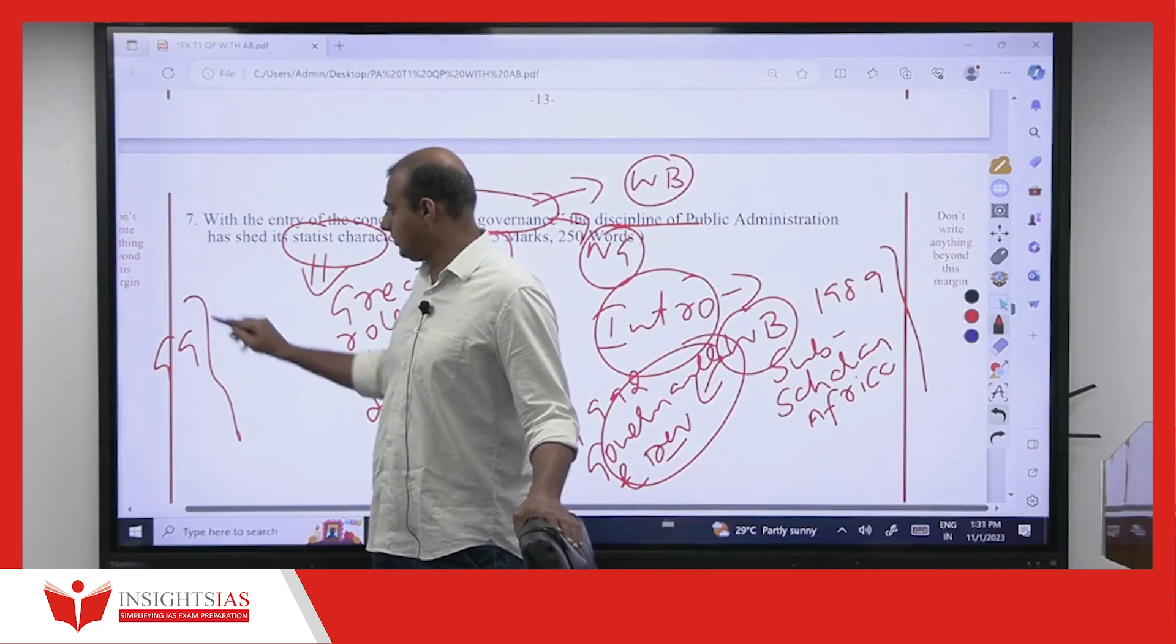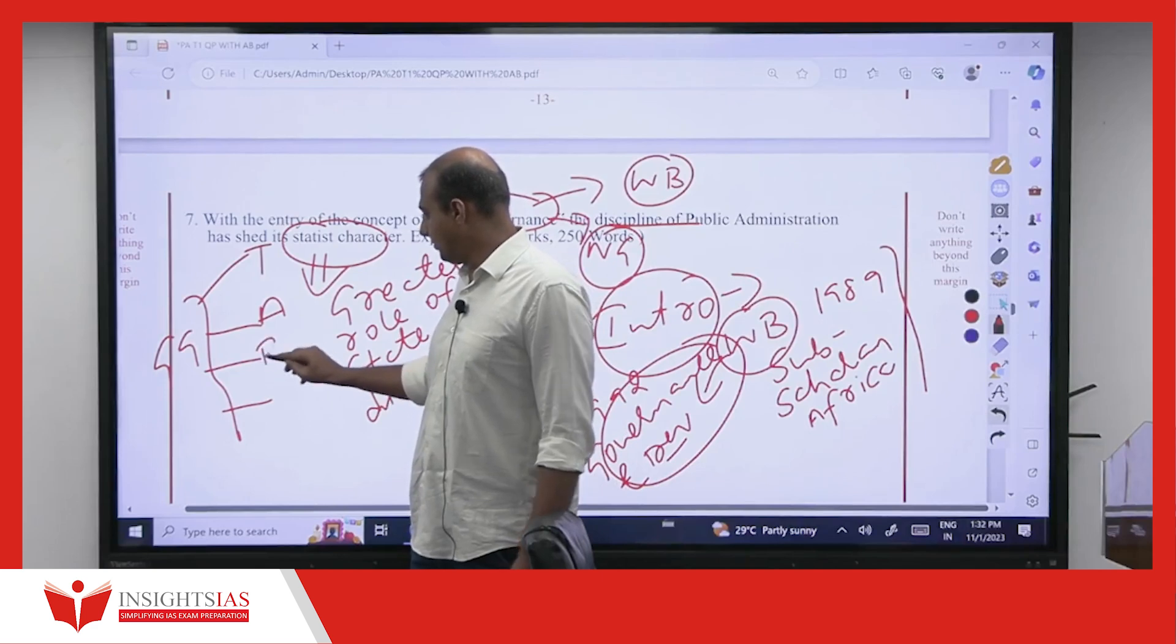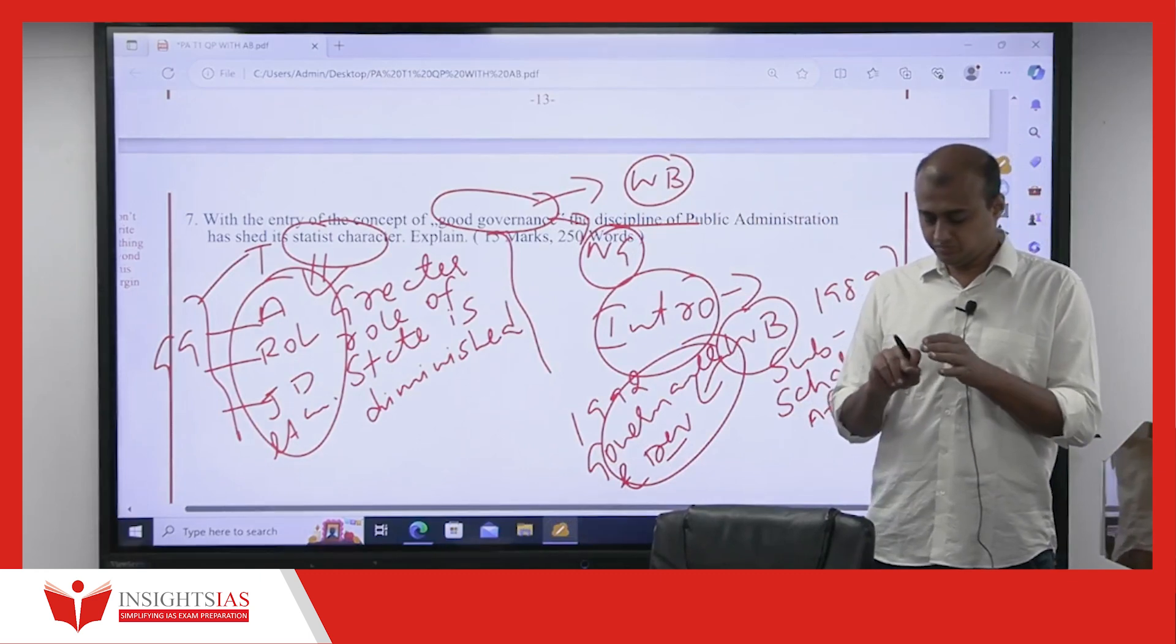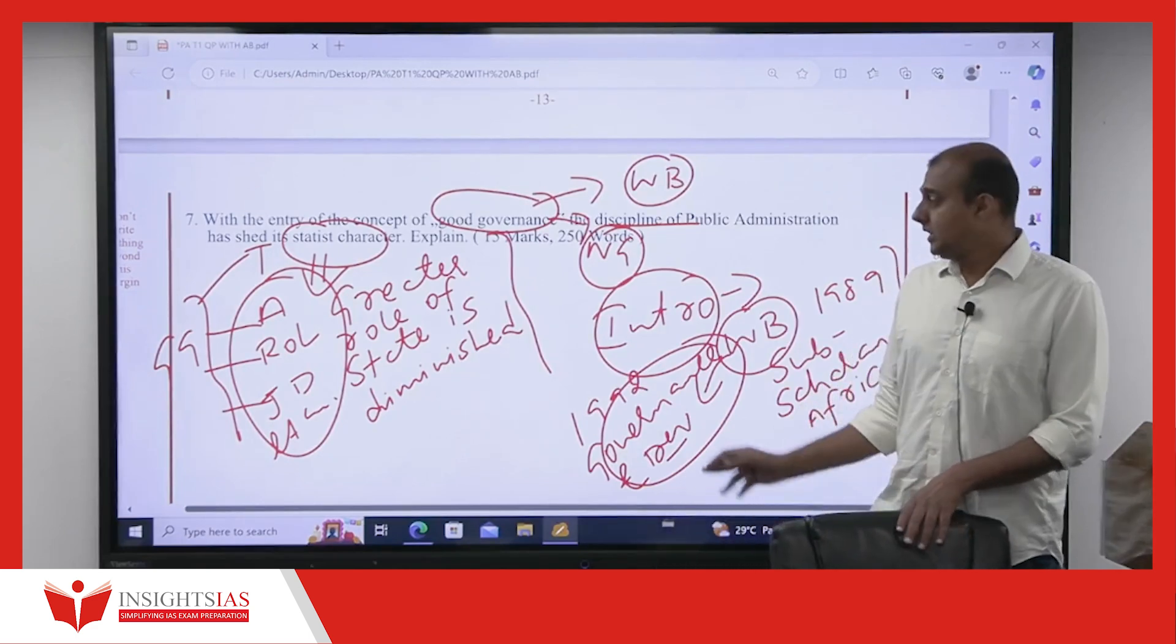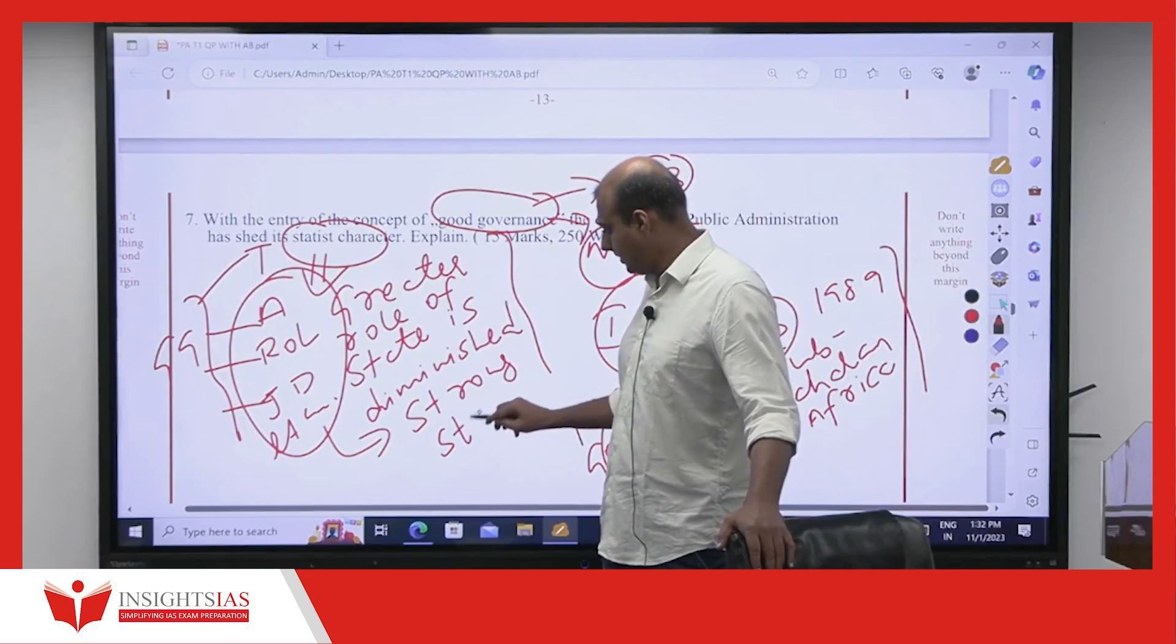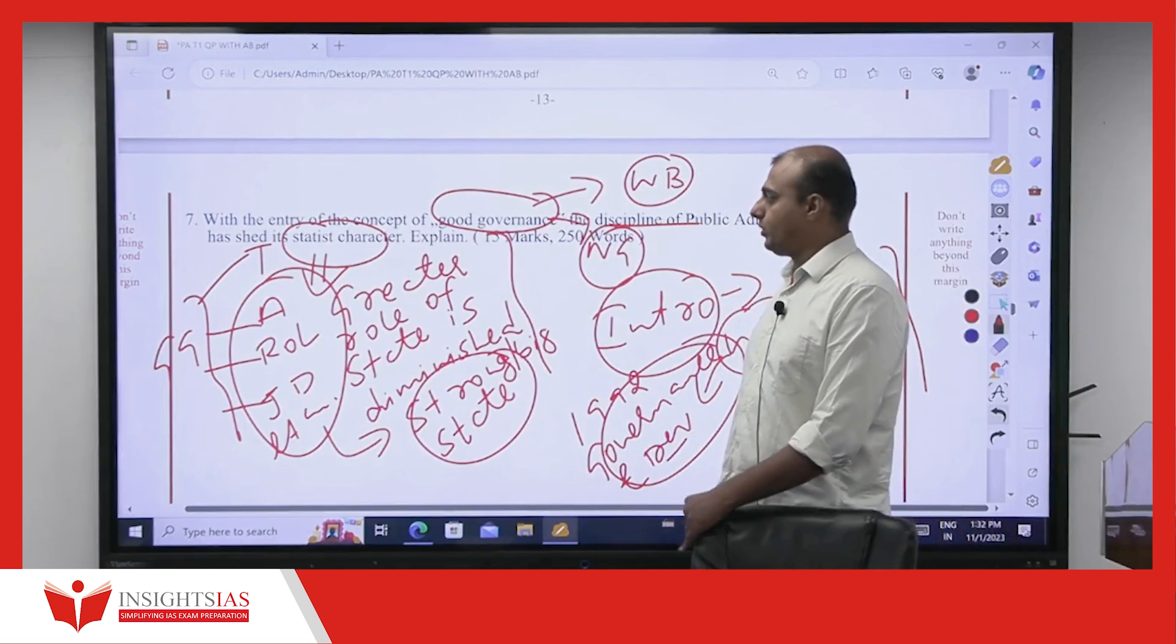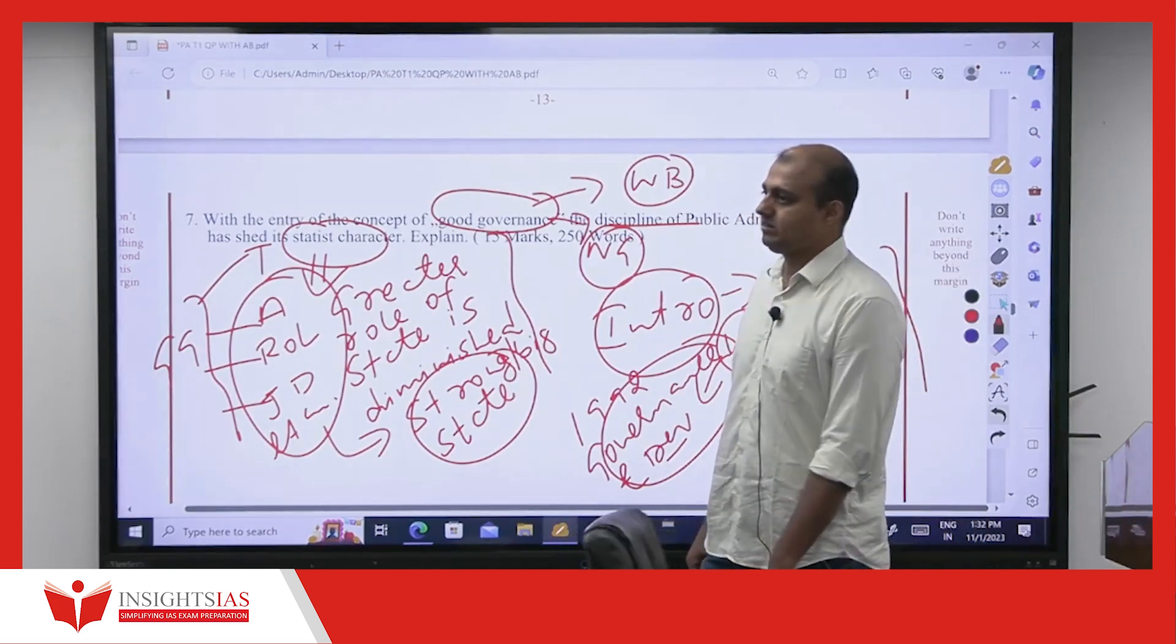And what did you tell? World Bank has identified the components of good governance. What all? Transparency, accountability, rule of law, justice delivery, so many things were all identified as the components of good governance. Because of this what happened? First of all, these ideas itself compromised the strong state, statist character. These components compromised the strong state idea, big state idea, because they wanted you to become more transparent, more accountable, greater role for private sector. These ideas itself have compromised the strong state or statist character of state.